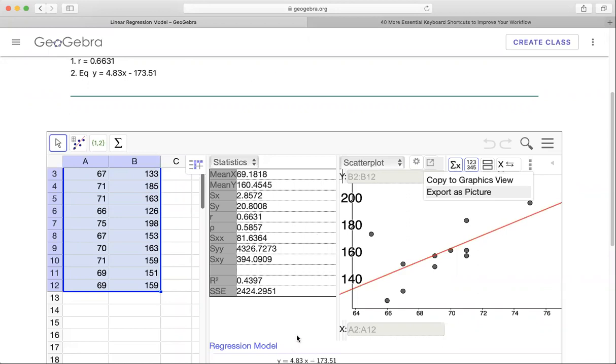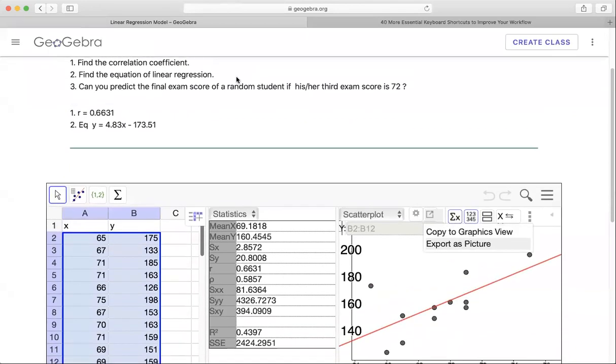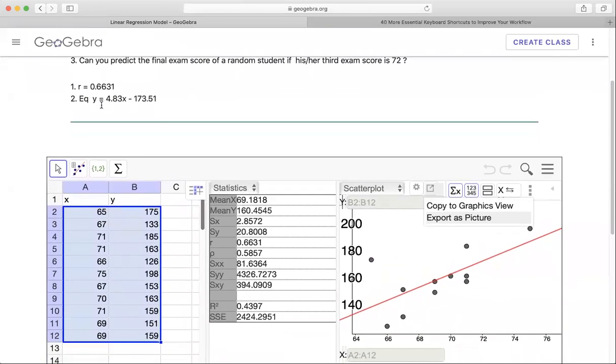So with this equation right here, I can predict what the next score would be if I know the value of x. So for example, I use this model for my next class. And then I will see if the student has a 72. If the student scores 72 on the exam, if this model is correct, then I can predict the score for the final exam for that student.